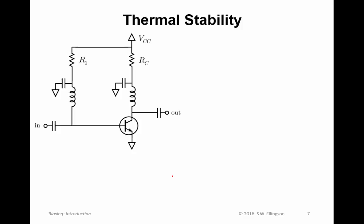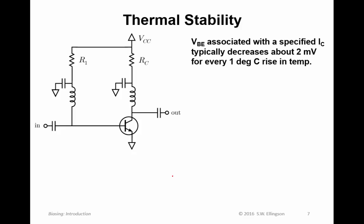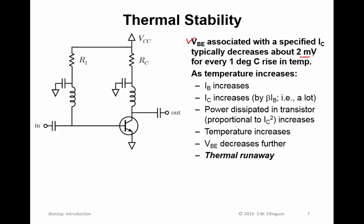As I just mentioned, the base-emitter voltage associated with a specified collector current typically increases by about two millivolts for every one degree Celsius rise in temperature. So just one Celsius increase in temperature changes VBE by about two millivolts. As the temperature is increasing, the base current is increasing. And because the collector current depends on the base current through beta, that's increasing by a lot. As a result, the power dissipated in the transistor increases by an even greater factor because that's proportional to collector current squared.